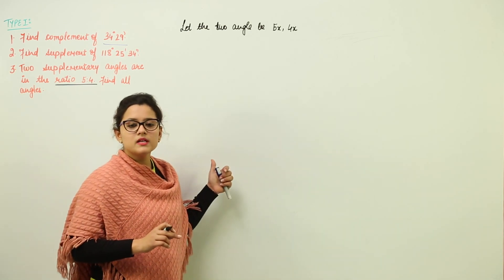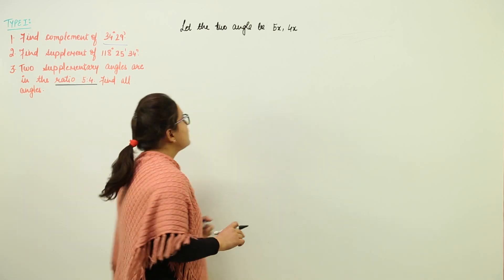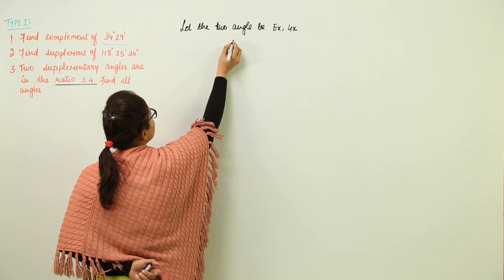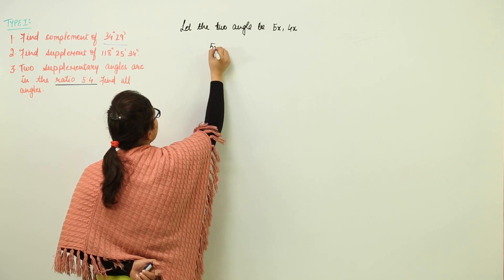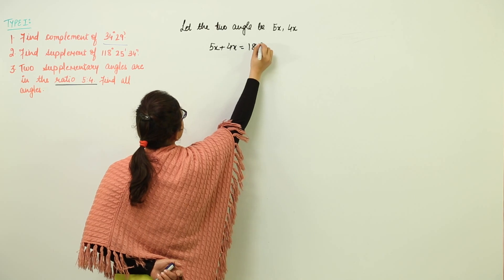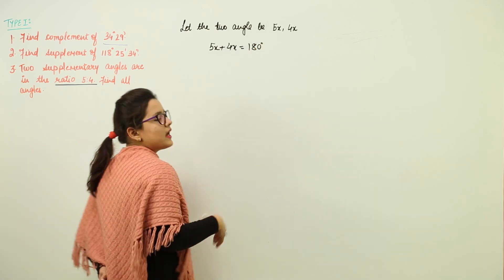Now, as we have been told that they are supplementary, so we'll write 5x plus 4x giving us 180 degrees. Now, because they are adding up to 180 degrees, we can solve them further.